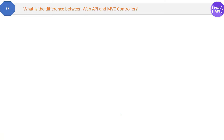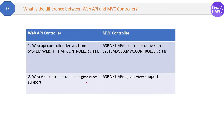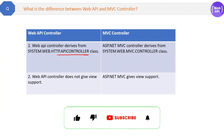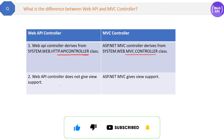Web API also has a controller, and in a normal ASP.NET MVC application there is a controller too. The difference is very simple: Web API controller derives from the System.Web.Http.ApiController class, and ASP.NET MVC controller derives from the System.Web.Mvc.Controller class. So this is one difference.